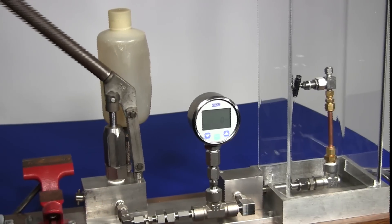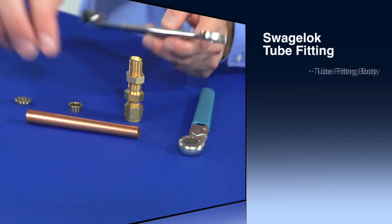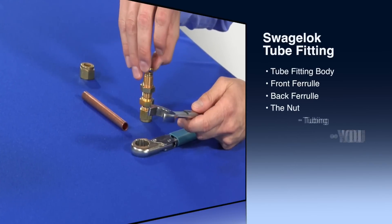First up is 3/8 inch copper tubing. In our previous video, we reviewed the six components involved in a Swagelok tube fitting installation, highlighting the importance of you, the installer.